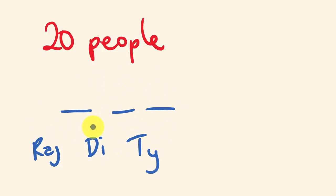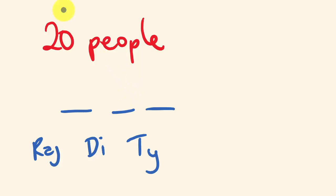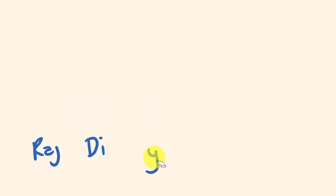Whereas if we're talking combinations, arrangement doesn't matter. Out of our 20 people, I've just selected three people and it happens to be these three. Combinations wouldn't really matter where these three guys sat, as long as they were sitting somewhere. But in this particular video, we're just going to be considering permutations, so order does matter.